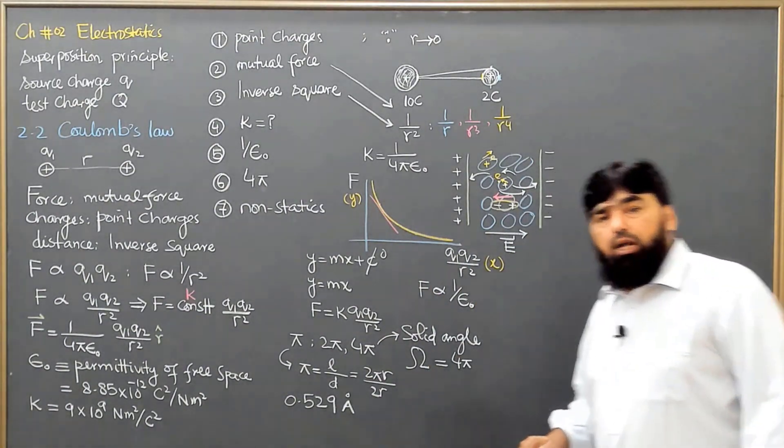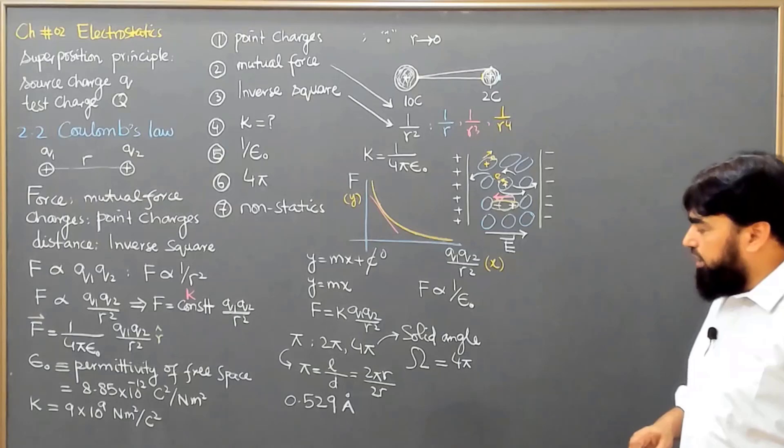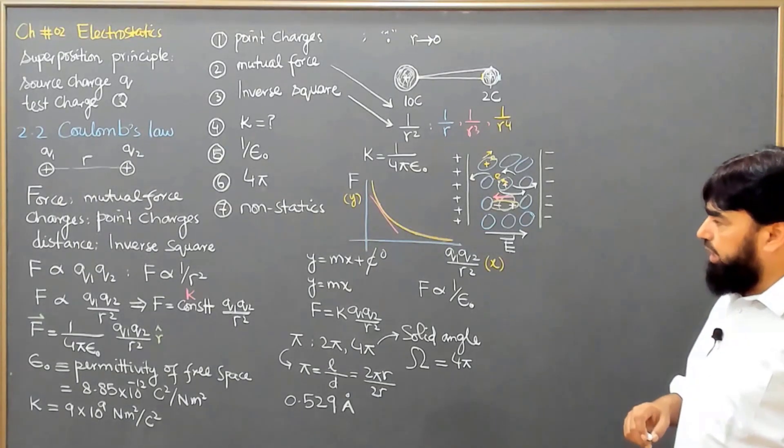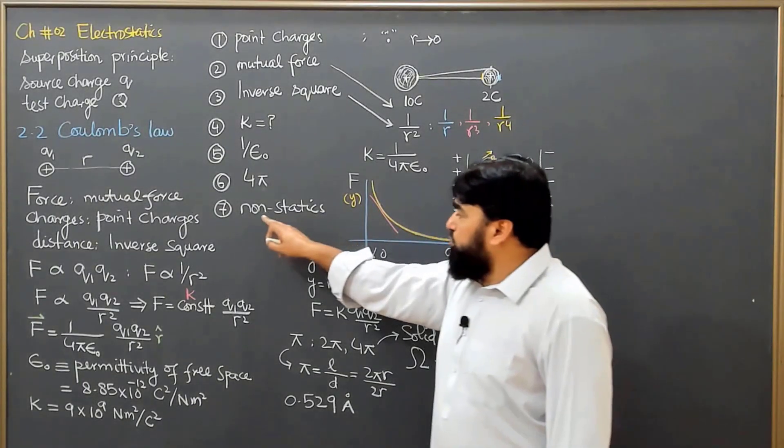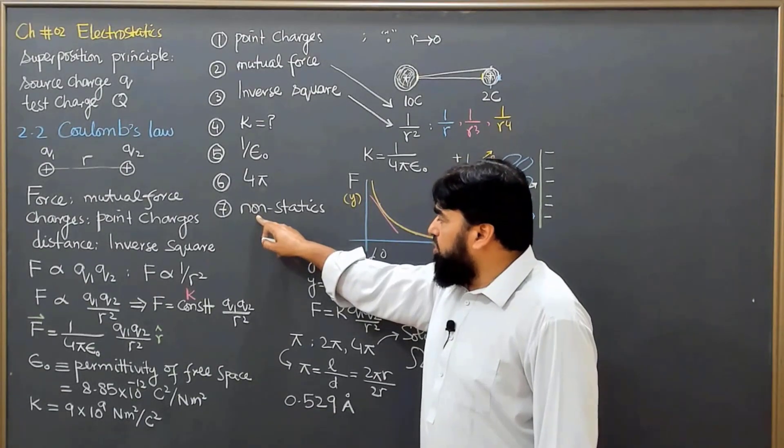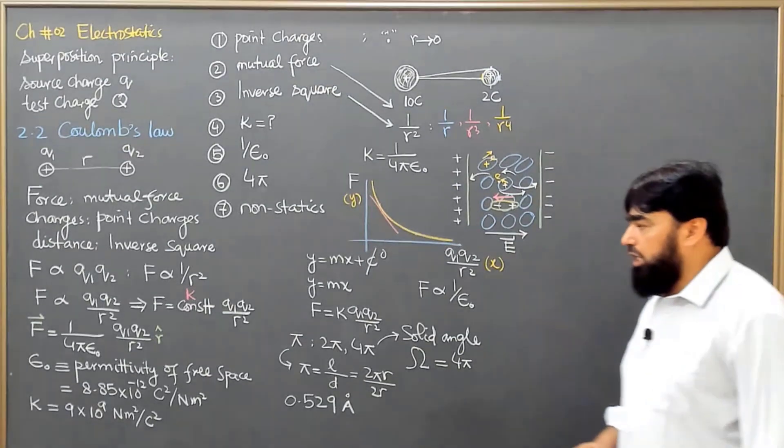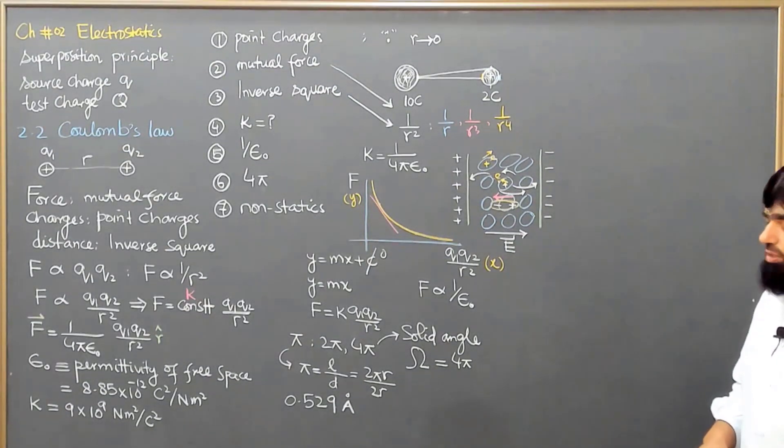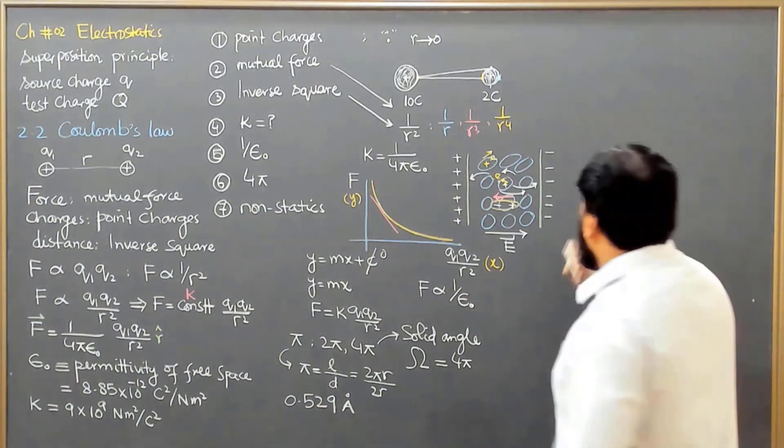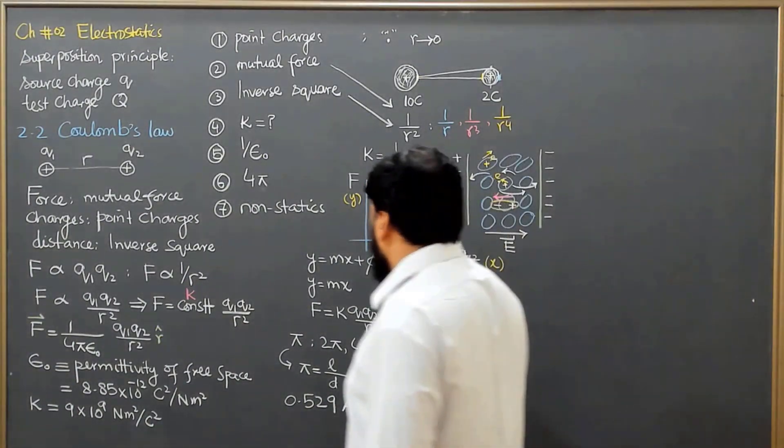Then the question comes in mind that as we were considering this thing for the static charges, the Coulomb law was for static charges, then why is it giving us a good result for the moving charges?